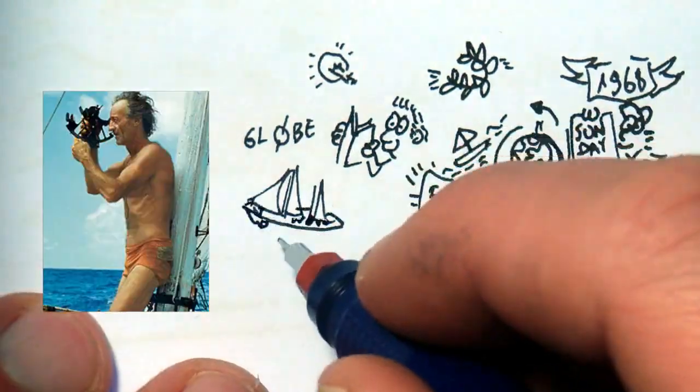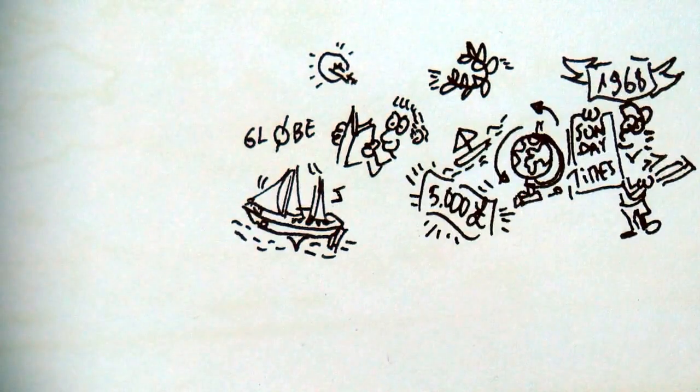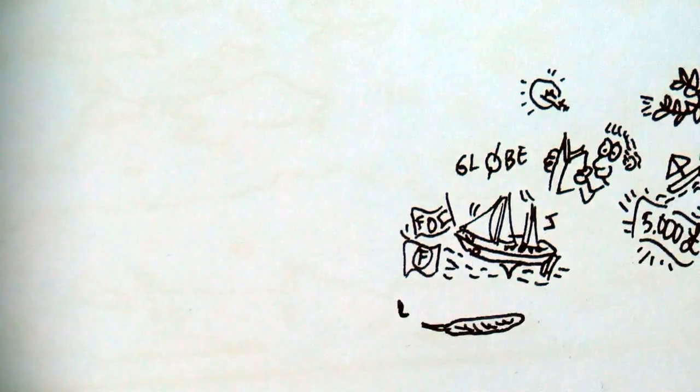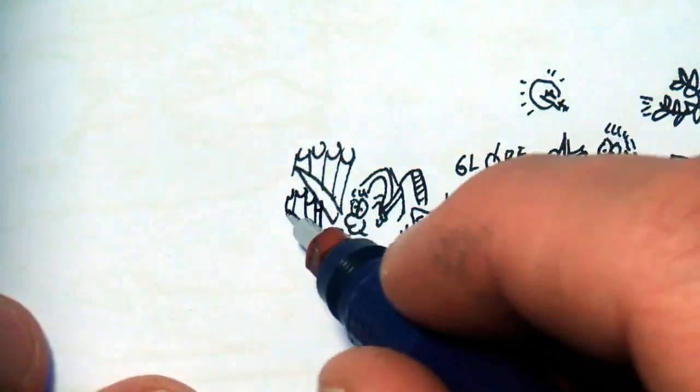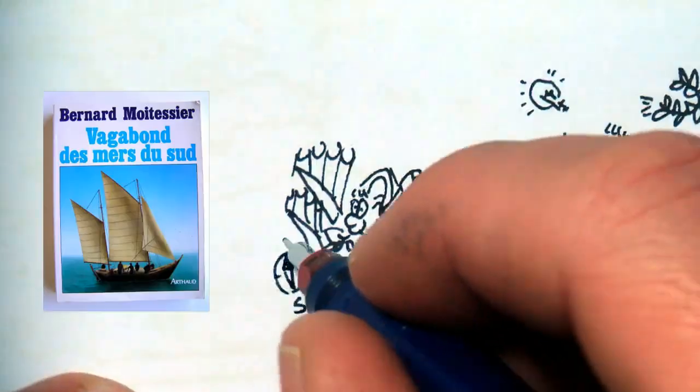Bernard Moitessier, writer, experimenter, and sailor adventurer of the South Seas, decided to participate with his new boat, which he could afford thanks to the royalties from his book Sailing to the Reefs.